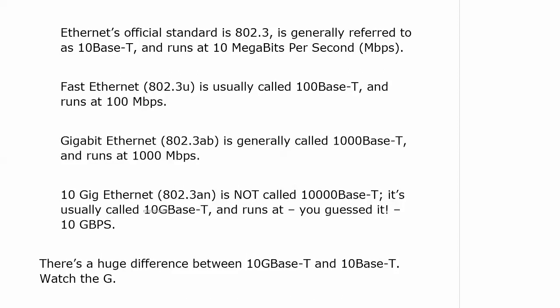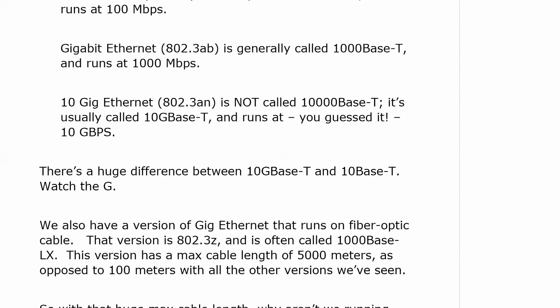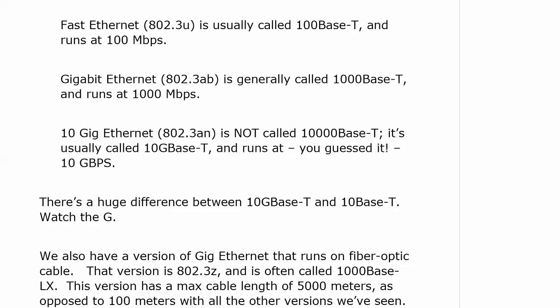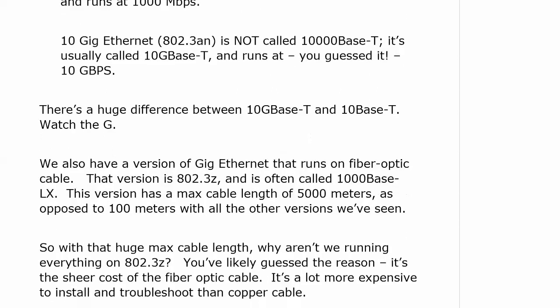There's a really big difference in speed between 10GBase-T and 10Base-T, obviously. So you definitely want to watch that G. Copper cable is not the only kind of cable we have in today's networks — we also have fiber optic cable. There's a version of Gig Ethernet that runs on that: it's 802.3Z, often called 1000Base-LX. This version has a max cable length of 5,000 meters, as opposed to 100 meters for everything else we've looked at. So it sounds like a trick question: why aren't we all running 1000Base-LX? And the reason is cost.